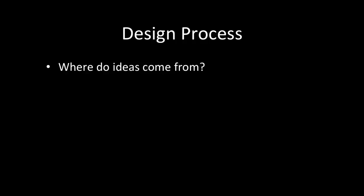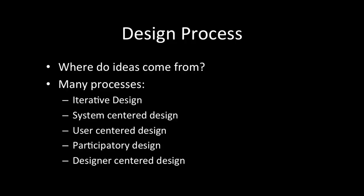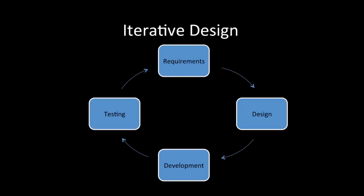First, let's talk about the design process. The goal ultimately is to see where ideas come from — this is what the design process gives us. You may come up with ideas sitting by yourself, talk with users, or talk with other designers. Different design processes help us develop ideas in different ways. We're going to look at a few of these, including iterative design, system-centered design, user-centered design, participatory design, and designer-centered design.